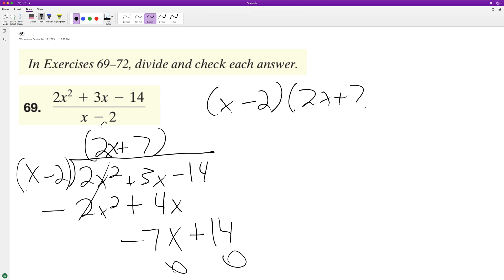If we get what's on top here it's correct. So we get 2x squared plus 7x minus 4x minus 14. 2x squared plus 3x minus 14, so it does check out. So 2x plus 7 is our factor or our result.